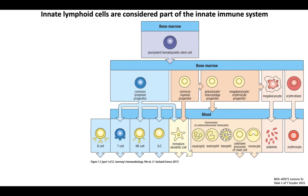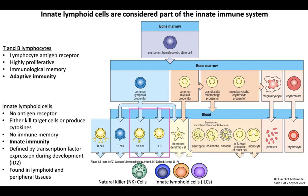However, there are a few subsets of cells that are derived from the common lymphoid progenitor, or CLP, that also conduct innate immune functions in host defense. These are cells that we categorize as innate lymphoid cells, or lymphoid cells with innate immune functions, and consist of natural killer cells, or NK cells, and innate lymphoid cells, or ILCs.